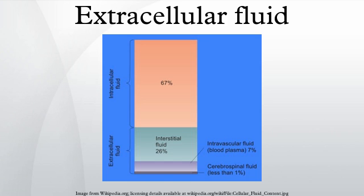Subcompartments: Interstitial fluid is the extracellular fluid bathing most tissues, excluding the fluid within the lymph and blood vessels. Blood plasma is the yellow or grey-yellow, protein-containing fluid portion of blood in which the blood cells and platelets are normally suspended.